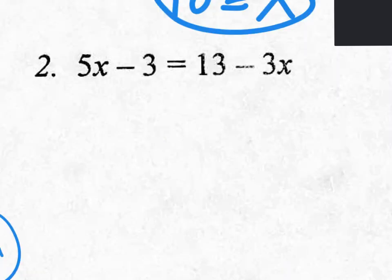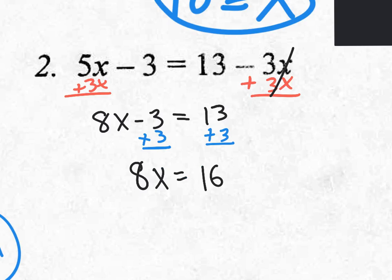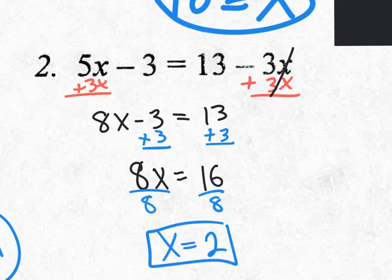Number 2 — because we ran out of time, I'll just show you the answer. Getting rid of the minus 3, my new equation forms, then get rid of the minus 3 again, and the final step is to divide by 8. X equals 2.